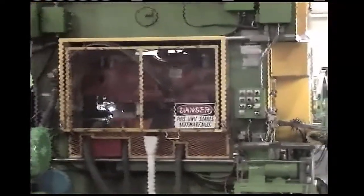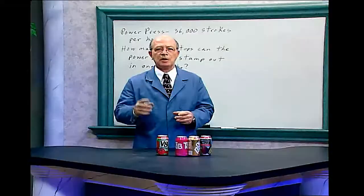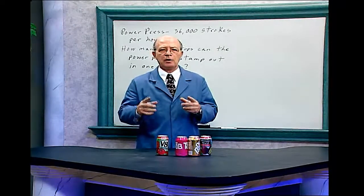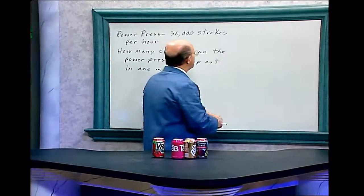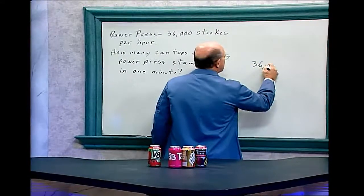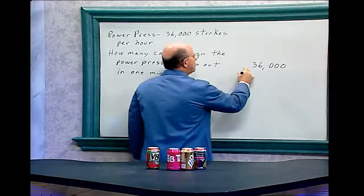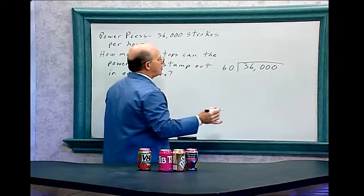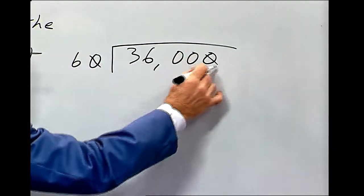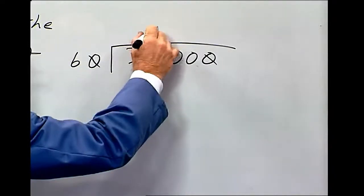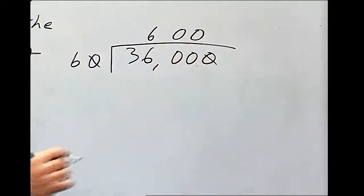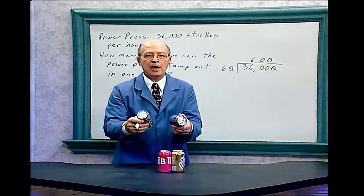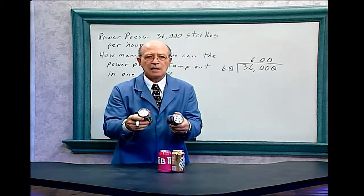I calculated that the power press stamps out 36,000 can tops in one hour. How many can tops can this power press stamp out in one minute? So it's 36,000 per hour, so we have to divide that by 60. There's 60 minutes in one hour. And the fast way both have a zero, so 6 goes into 36 times 6. So in one minute, it could stamp out 600 can tops. And you can imagine, there's millions of these can tops that are made.